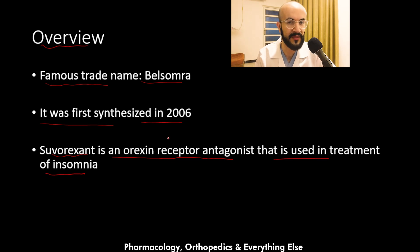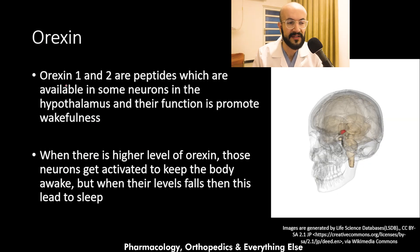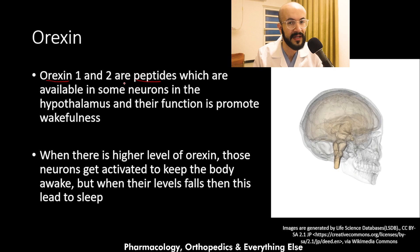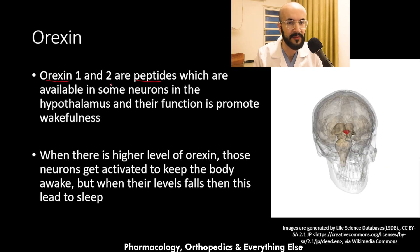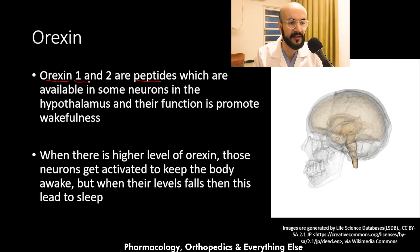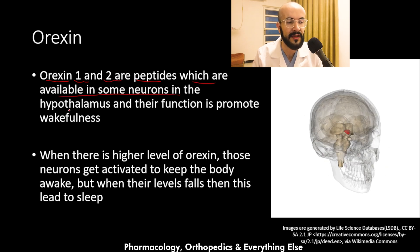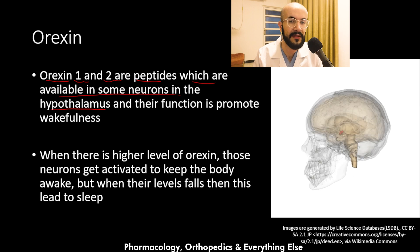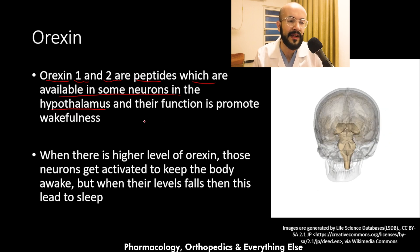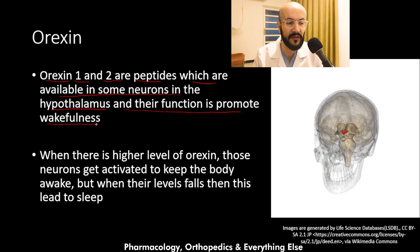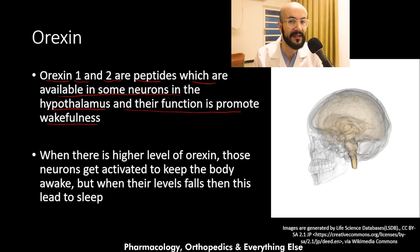A question comes to mind: what is orexin and how is it related to sleep? Orexin is a peptide, and there are two types available in the brain — orexin 1 and orexin 2 — found in some neurons in the hypothalamus. Their function is to promote wakefulness and keep the body awake.